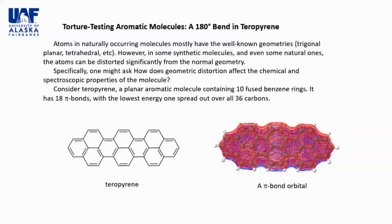Consider teropyrene, a planar aromatic molecule containing 10 fused benzene rings. It has 18 pi-bonds, with the lowest energy one spread out over 36 carbons.